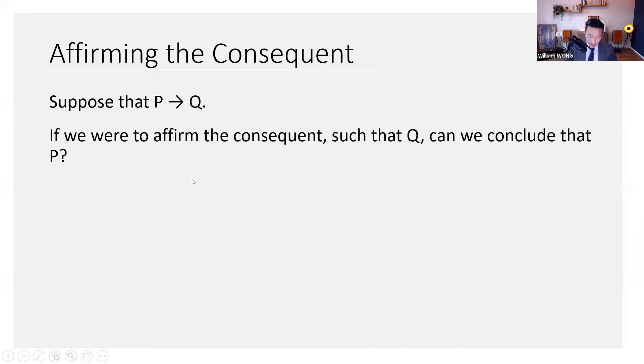What does that mean? So suppose your first premise is P entails Q. What would affirming the consequent fallacy consist of? Have a think.